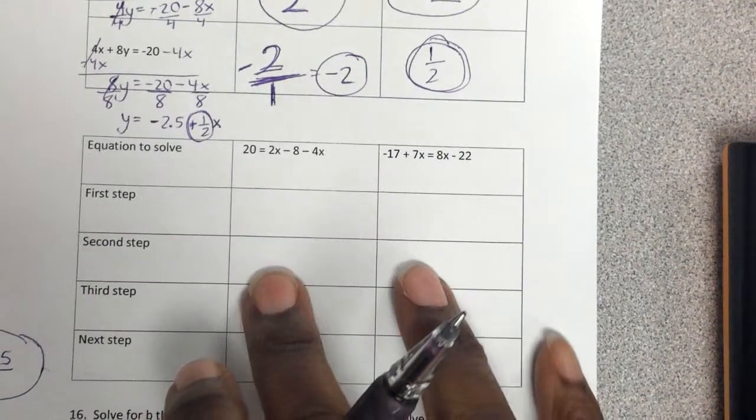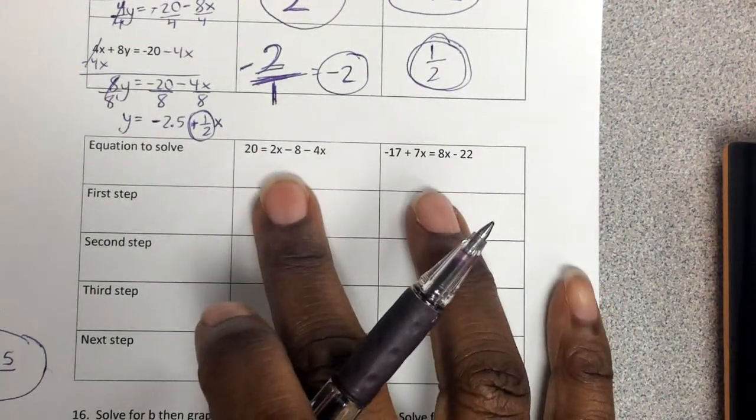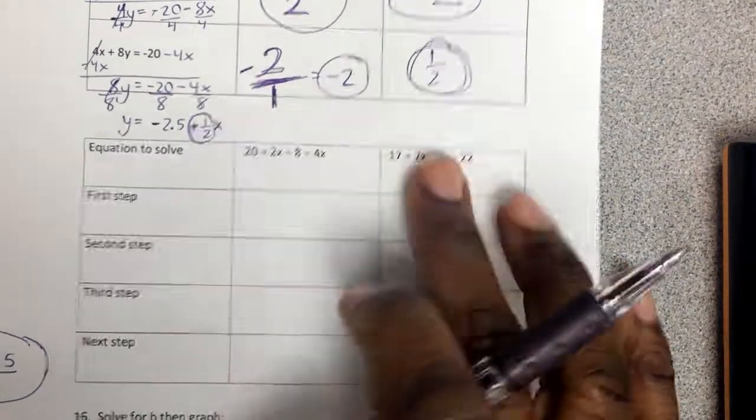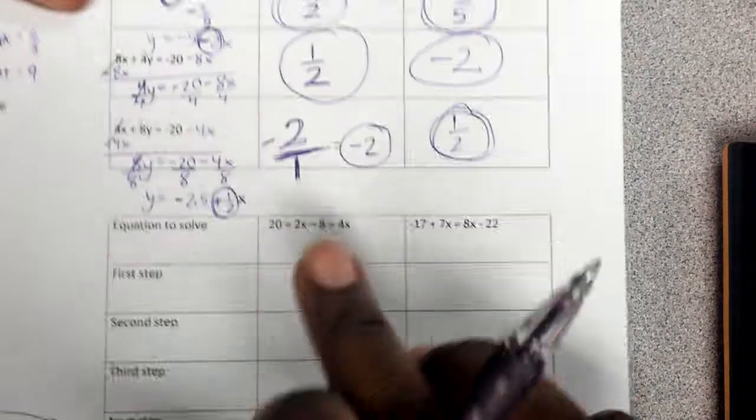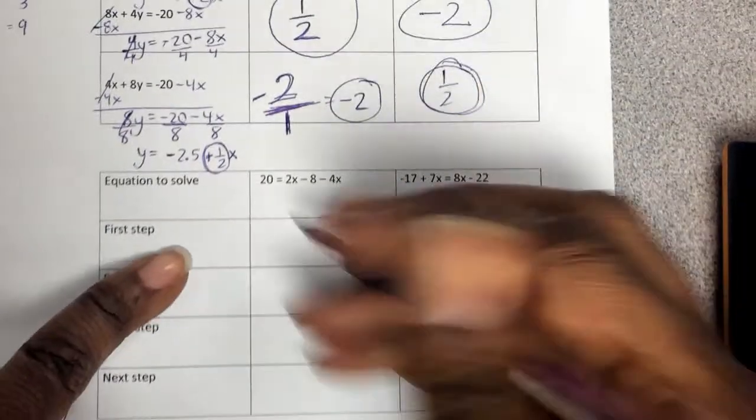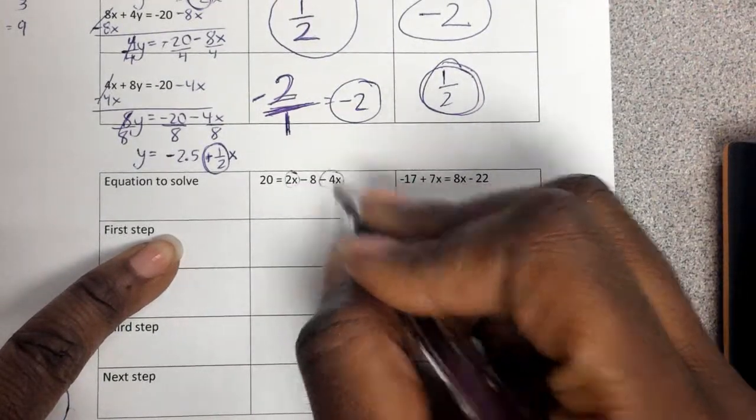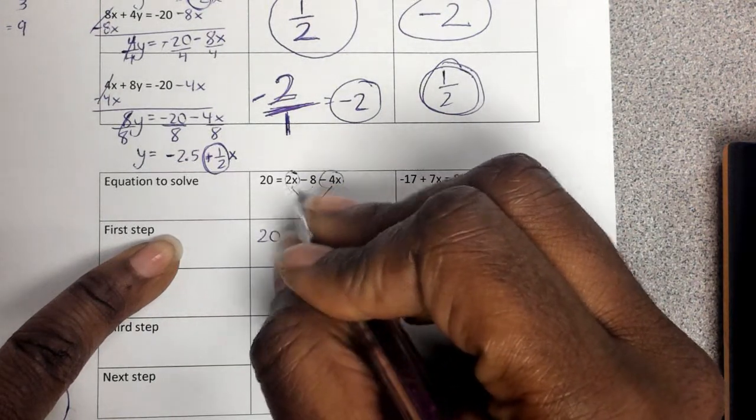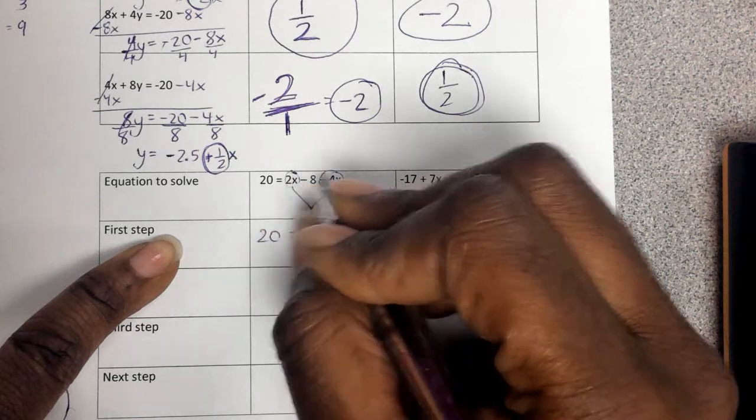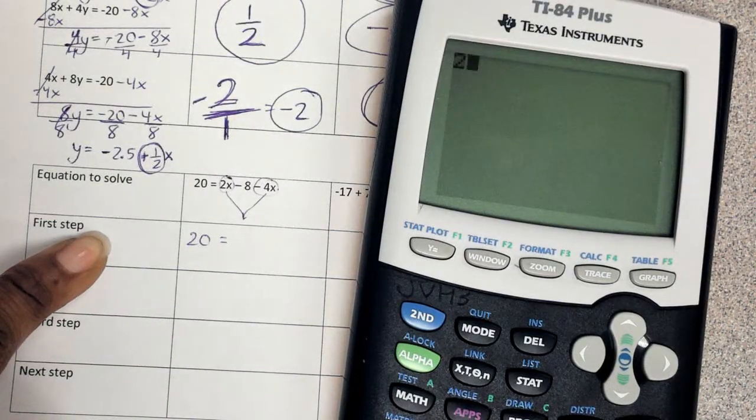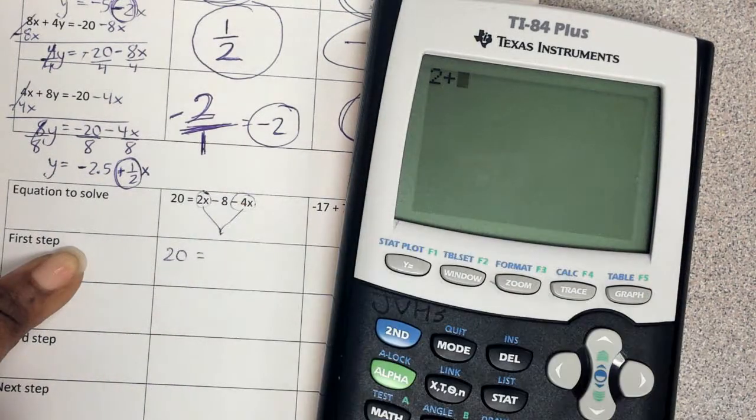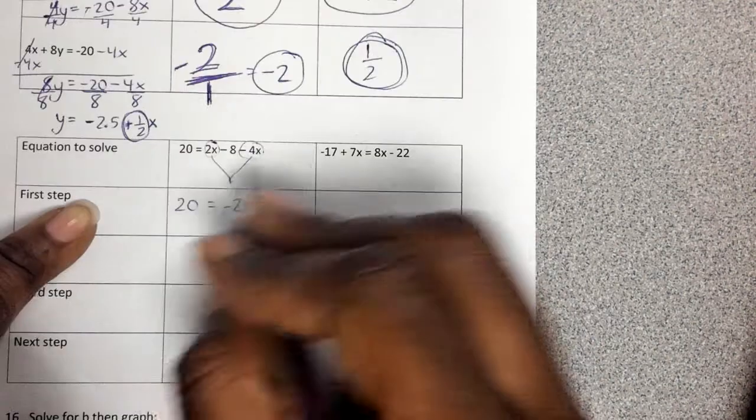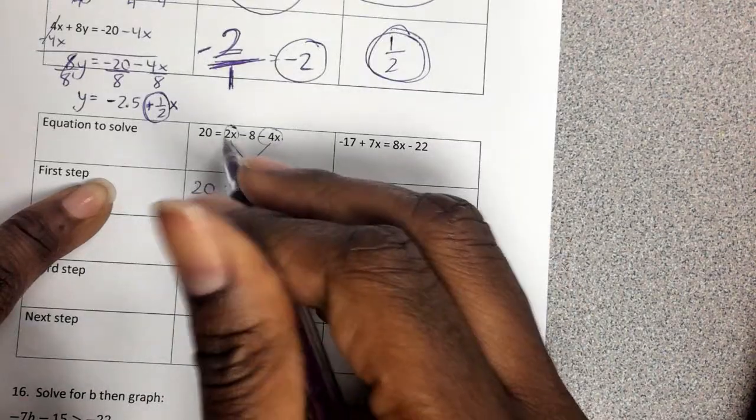Now, one of the other sections was solving equations. Just solving for x. Here we're just solving for x. Or solving for p or q. Whatever it is. We're not converting. We're only solving. So first step. Well, notice there's like terms. We got to combine those. So that would be 20 equals. Combine those like terms. 2. So we're combining. So we're at 2 plus. What kind of 4? Negative 4. So that's a negative 2x. Then bring down the negative 8. That's the first step. Combining the like terms. I'll draw my line and the equal sign right there.